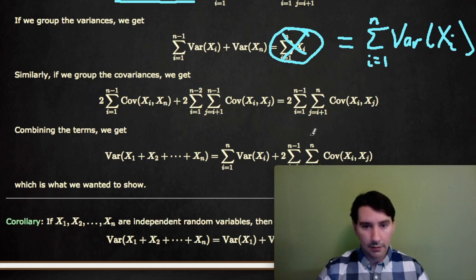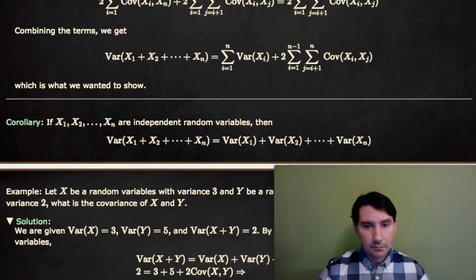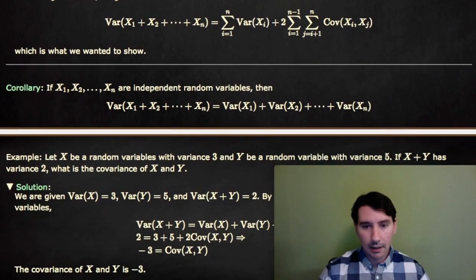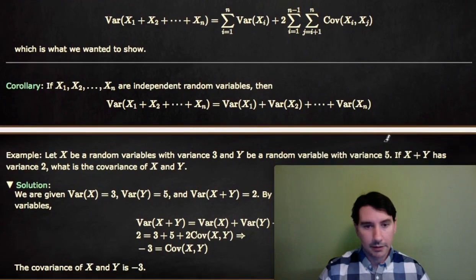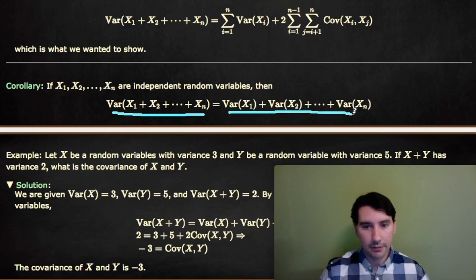And so that does give the result. As a corollary, if X1 through Xn are independent random variables, then the variance of their sum equals the sum of the variances: variance of X1 plus variance of X2 and so on down to Xn.